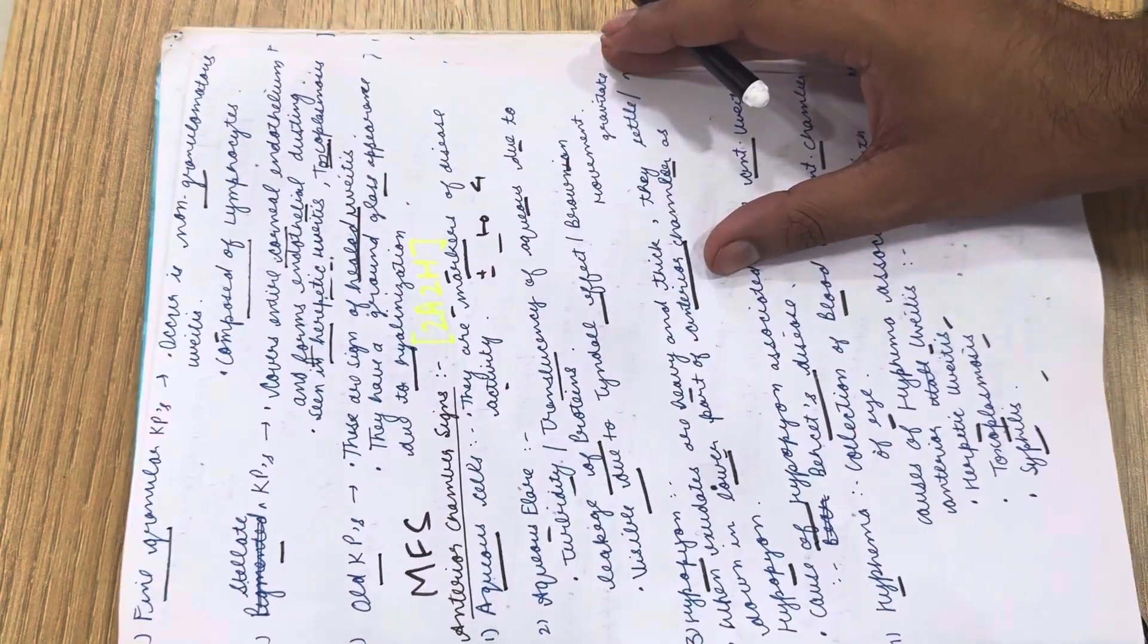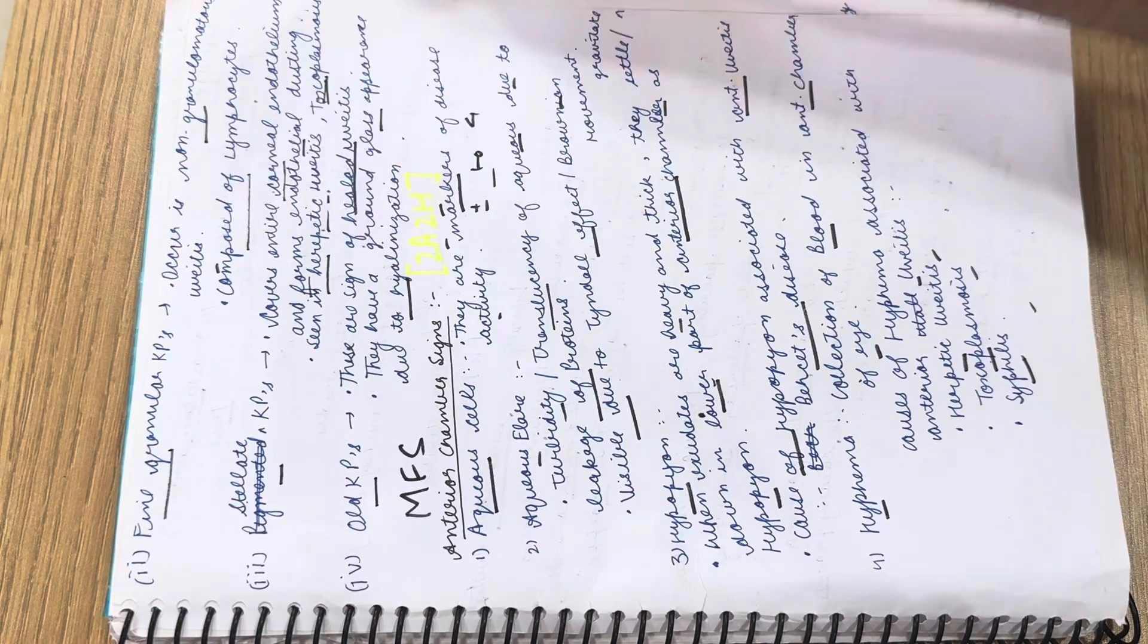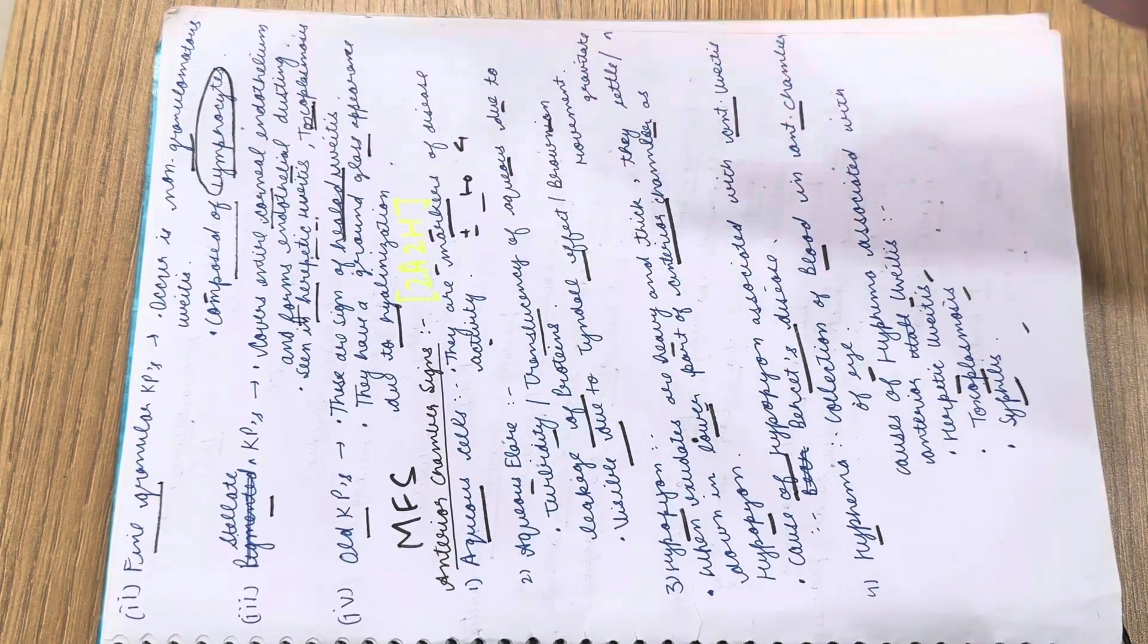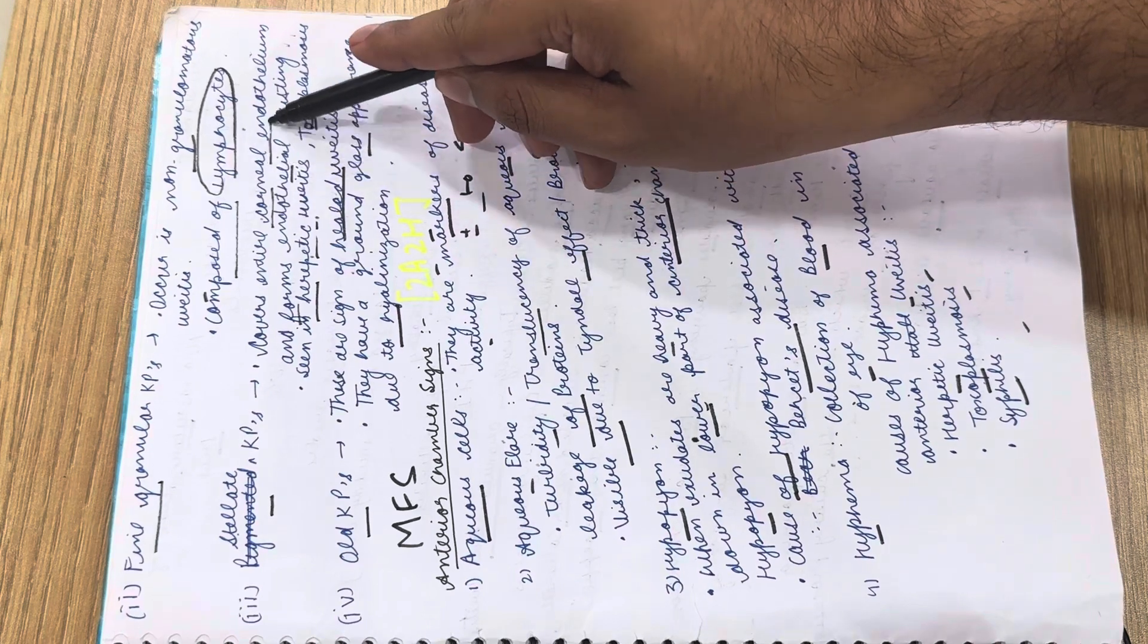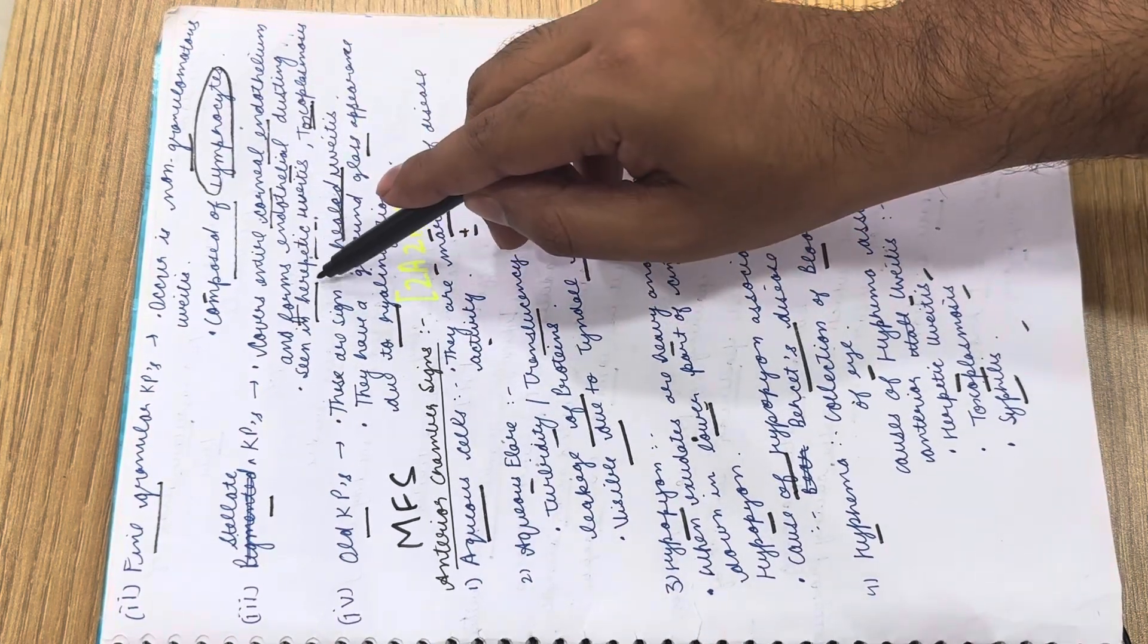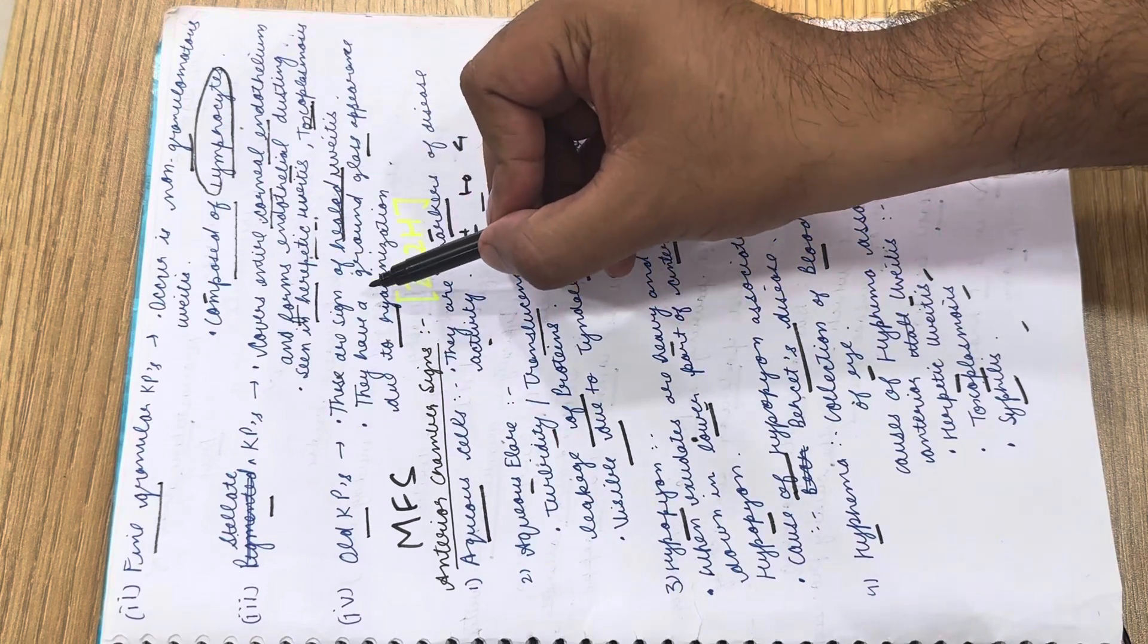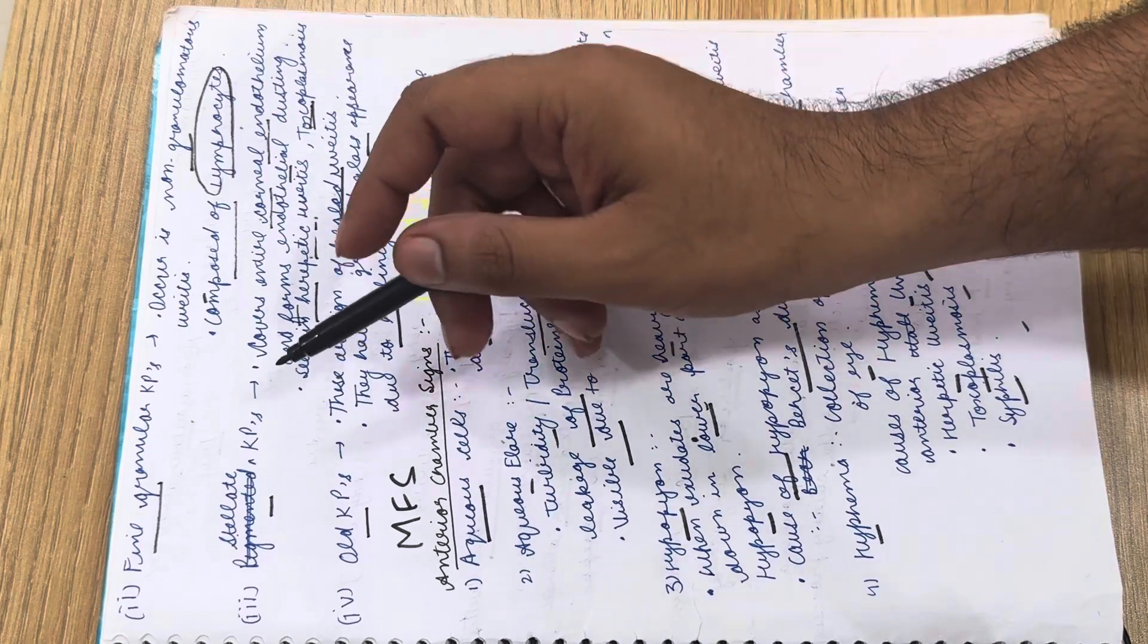S stands for stellate KPs, which cover the entire corneal endothelium forming endothelial dusting. It is seen in herpetic uveitis and toxoplasmosis. Lastly, we have old KPs, which are signs of healed uveitis. They have a ground glass appearance due to hyalinization.